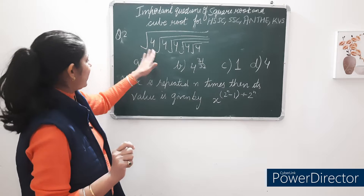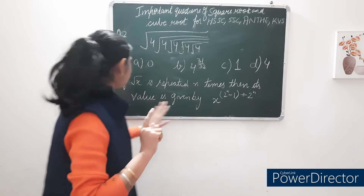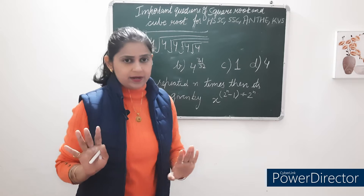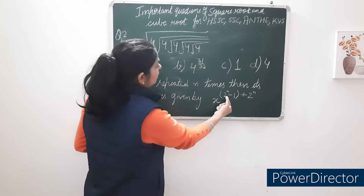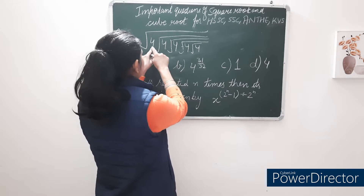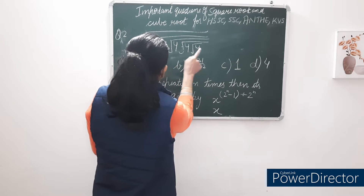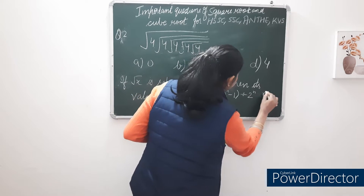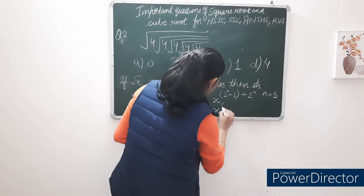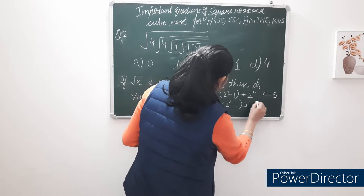The general rule is: if √x is repeated n times, then its value is given by x^((2^n − 1) / 2^n). Here, x = 4 and n = 5 (since root 4 is repeated 5 times). So we put these values into the formula.